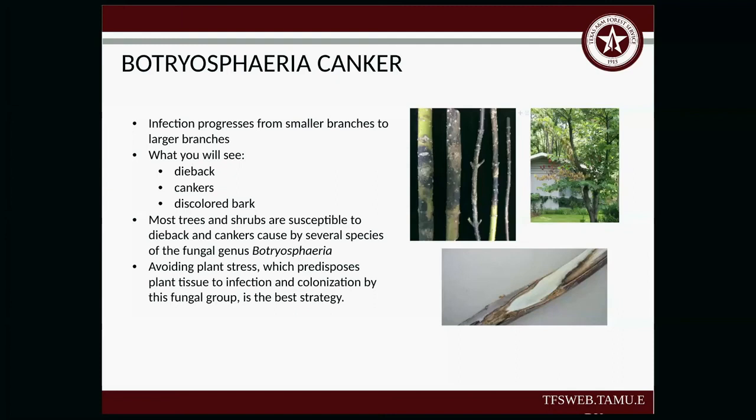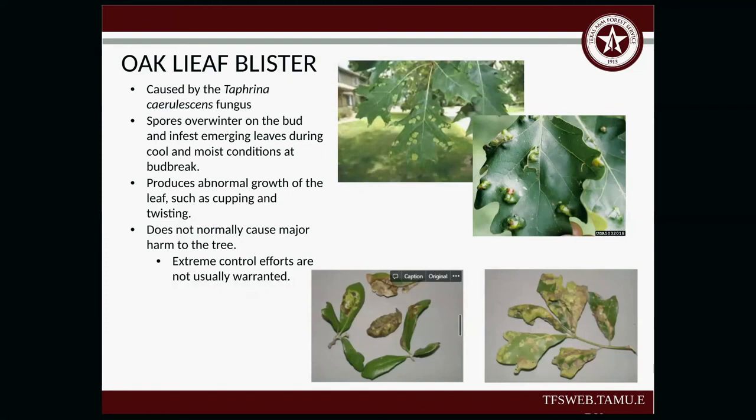Oak leaf blister — this is not going to hurt your tree. It's caused by the Taphrina caerulescens fungus. The spores overwinter on the buds, and when the leaves start emerging, the fungus gets onto the leaf — so the fungus isn't actually in the tree, just on the leaf. To take care of it, next year when it drops the leaves, break them up and destroy them — that will help put a break in the cycle.